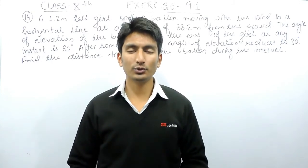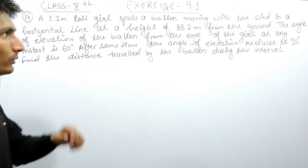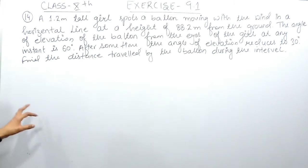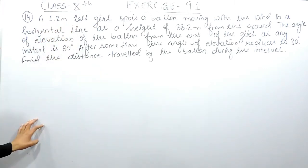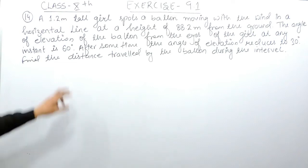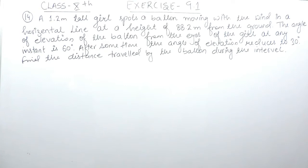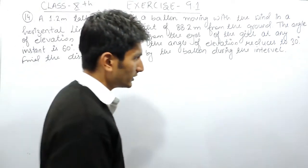Hello everyone, we are from True Maths and in this video we are going to solve question number 14 of exercise 9.1. The question says: a 1.2 meter tall girl spots a balloon moving with the wind in a horizontal line at a height of 88.2 meters from the ground. The angle of elevation of the balloon from the eye of the girl at any instant is 60 degrees. After some time the angle of elevation reduces to 30 degrees. You have to find the distance traveled by the balloon during the interval.